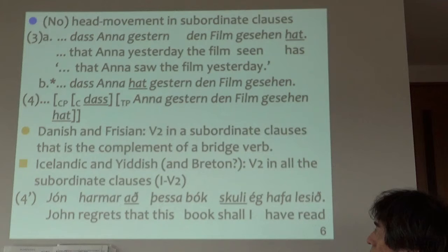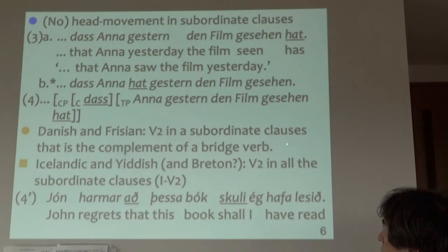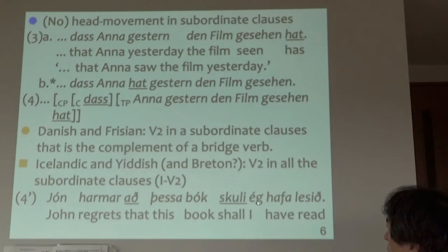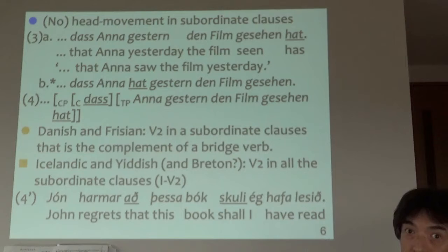That's the explanation. But we should be careful about dialectal or language differences — like Danish and Frisian, where V2 occurs in a subordinate clause if it's a complement of a bridge verb like 'say' or 'think.' Moreover, in Icelandic and Yiddish, V2 occurs in all subordinate clauses. In Yiddish: 'as aza buku squareg half a race' — 'as' is a complementizer, but still the finite verb stays in the second position. So the standard analysis cannot explain this data.